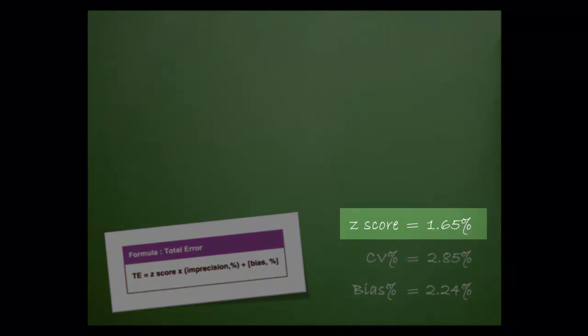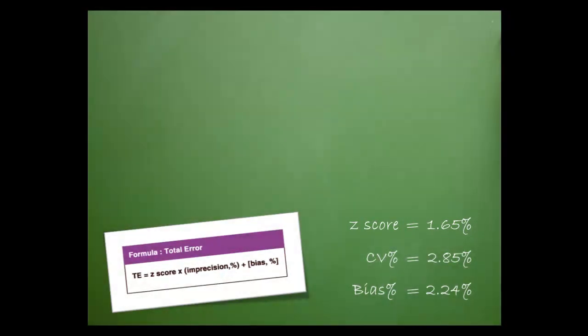We've chosen a z-score of 1.65 because we want to include 95% of the values within our target limits.